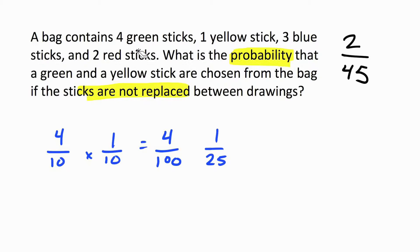We can start with the 4 green sticks out of 10, because when you first draw the sticks, there are 10. But after we remove one of those sticks, we are not left with 10 sticks anymore. We only have 9 remaining. So when we go to choose that yellow stick, there's only one option, but this time there's only 9 sticks in the bag. So there were 10 sticks, now there's only 9.